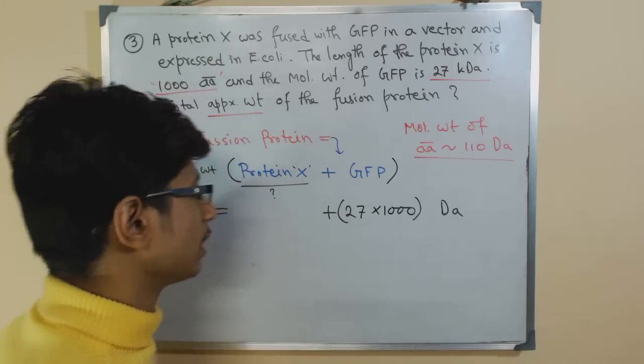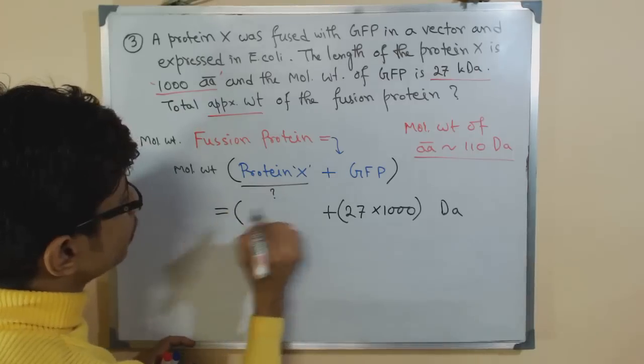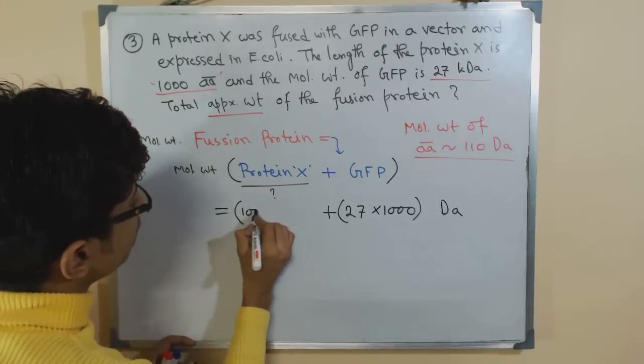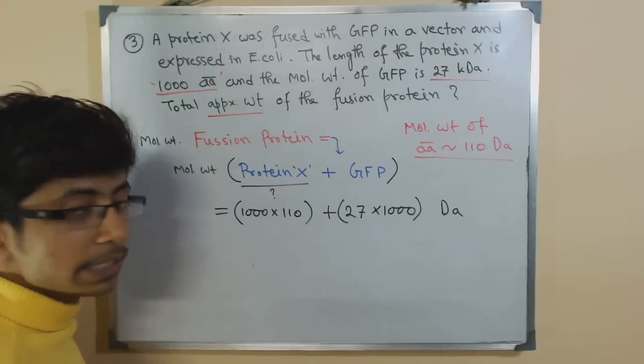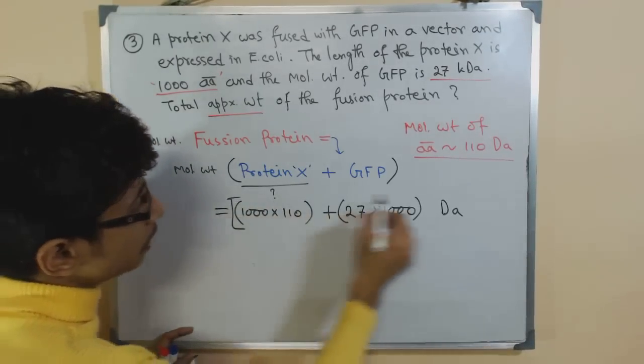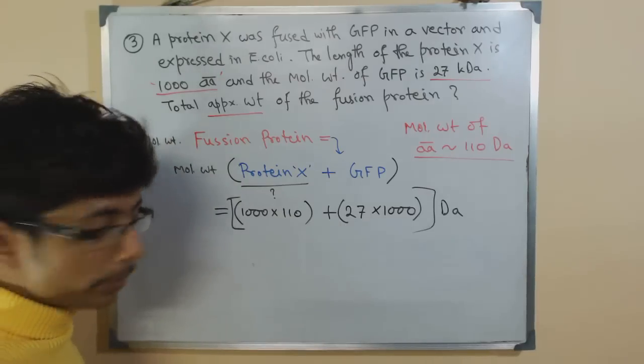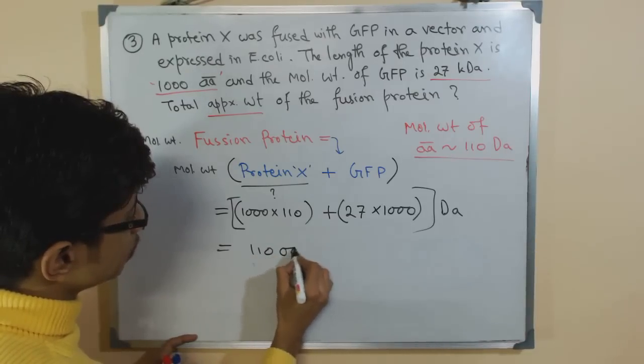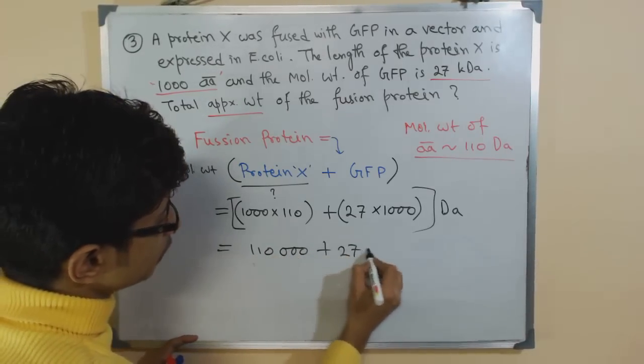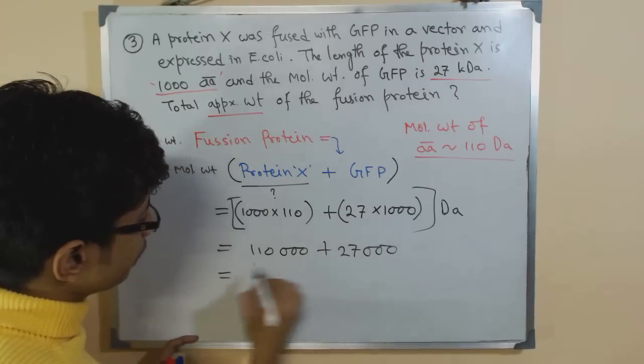So what we calculate here: it's 1000 amino acids, each 110 Dalton, so ultimately we get the value. So total of this molecular weight, now let's do a simple calculation. That is 110,000 plus 27,000, and here we go.